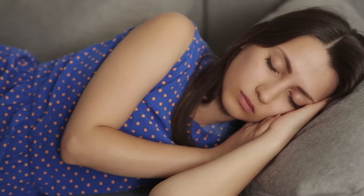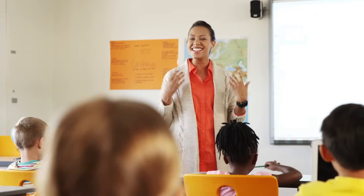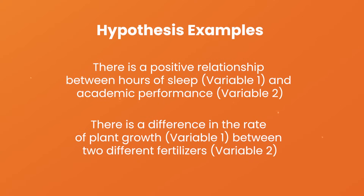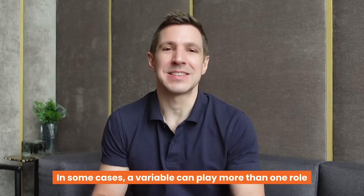Quite often researchers are interested in how one variable impacts another variable and to what extent. For example, how someone's age impacts their sleep quality, or how different teaching methods impact the average test scores for students. Variables also form the foundation of hypotheses, so it's really important to have a solid understanding of the variables in any study, especially if you're planning to do quantitative research. There are many different types of variables, and oftentimes there are multiple names for the same variable. To further complicate matters, one type of variable can also sometimes act as another type of variable.